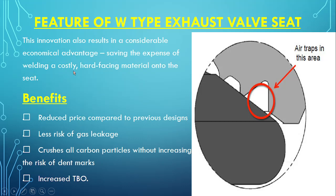The innovation also brings a considerable economical advantage, saving the expense of welding a costly hard-facing material onto the seat. This design is also cost-saving and effective. The air may get entrapped in the concentric area, providing a cooling effect. After that, the contact area does not form dent marks, and it squeezes out any entrapped carbon particles. The amount of material required is also reduced compared to the normal seat, making it cost effective.